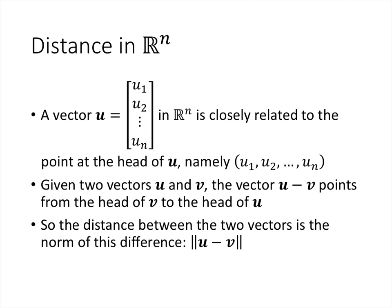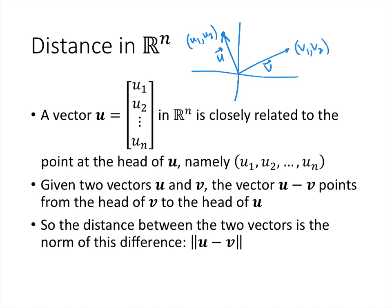We can also think of the distance between two points as the distance between two vectors. If I have vector u pointing to (u1, u2) and vector v pointing to (v1, v2), the distance between these two points is the length of u minus v. The vector u minus v points from the head of v to the head of u, so the distance between the two points is simply the norm of u minus v.